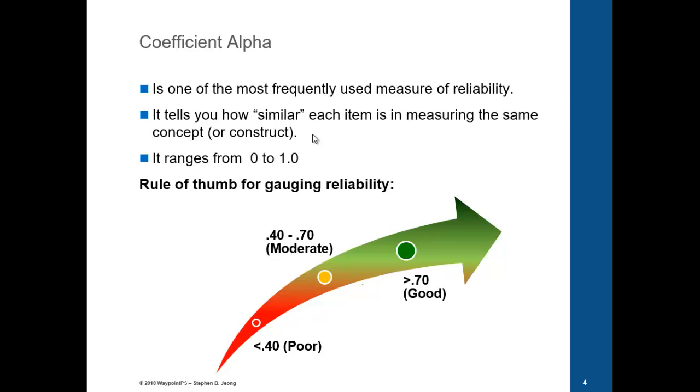Coefficient Alpha tells you how similar each item is in measuring the same concept or construct. If you think about shyness as a concept, we don't usually ask a single question to measure shyness. We usually ask a set of questions, anywhere from four to ten items that measure shyness from different angles. That's what I mean by each item. We want to make sure that all of those items designed to capture that concept of shyness are in fact moving in the right direction or capturing the same idea.